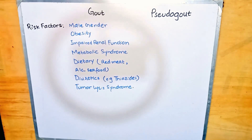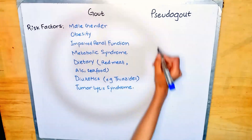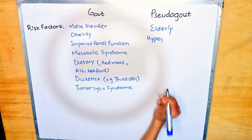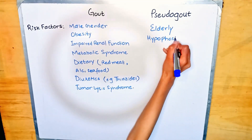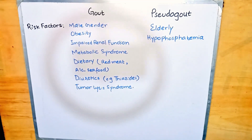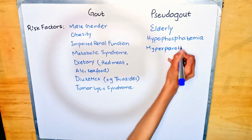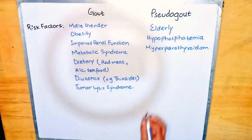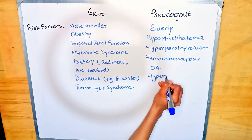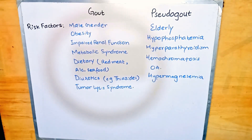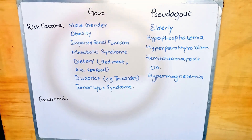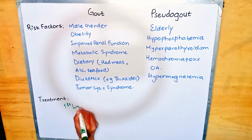Risk factors for pseudo gout include elderly age and hypophosphatemia. Hyperparathyroidism can also cause pseudo gout. Additionally, hemochromatosis, osteoarthritis, and hypermagnesemia are all risk factors for pseudo gout.